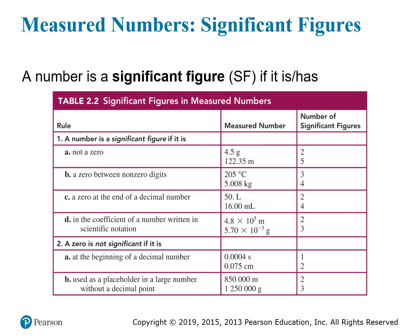This chart gives us an opportunity to review some of these rules. In the first numbers, we can note that every digit is non-zero, so they're all significant. The first number has two significant figures, and the second number has five. In the next two examples, there are zeros between non-zero digits, so we have to count those as significant too — giving us three significant figures in one case and four in the other. In this row, there are two numbers that contain decimal points, so we need to include the zeros on the right-hand side as well. The first one has two digits in total, and the second one has four significant figures in total.